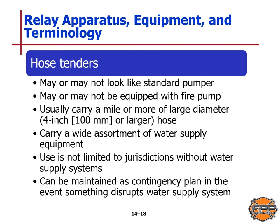Hose tenders may or may not look like a standard pumper and may or may not be equipped with a fire pump. They usually carry a mile or more of large diameter — 4 inch or 100 millimeters or larger — hose. They carry a wide arrangement of water supply equipment and their use is not limited to jurisdictions without water supply systems. They can be maintained as a contingency plan in the event that something disrupts a main water supply system.